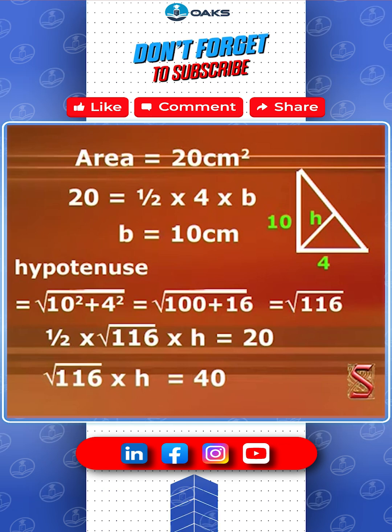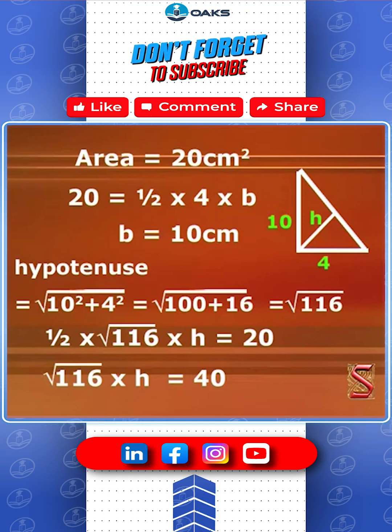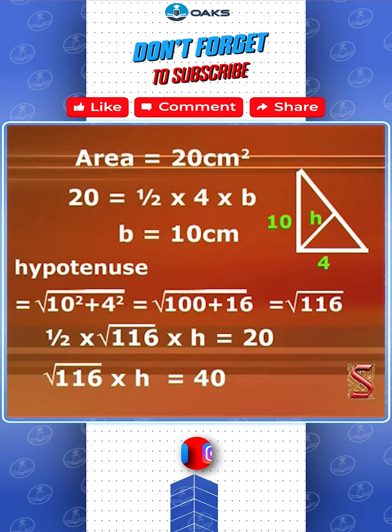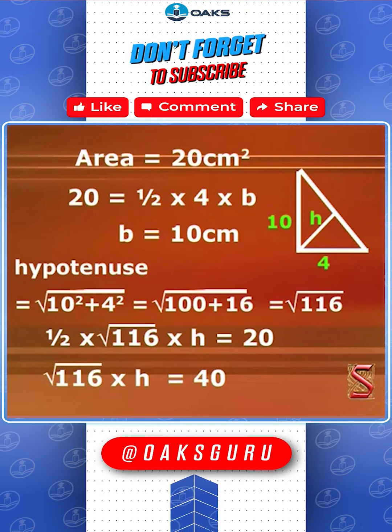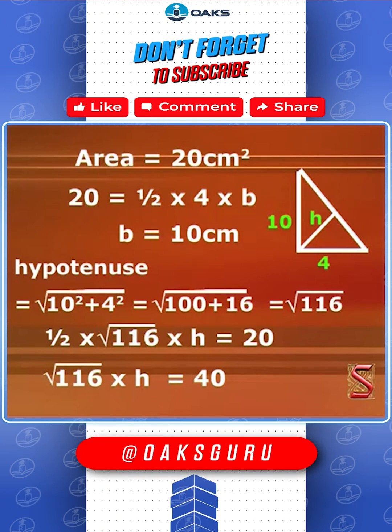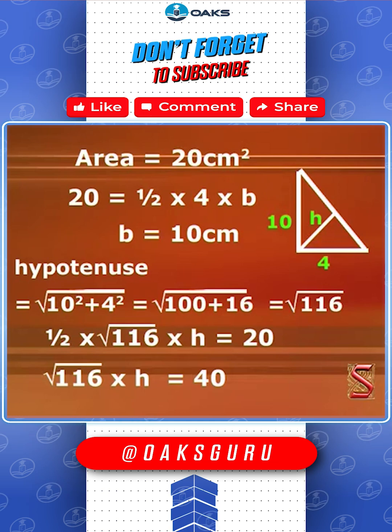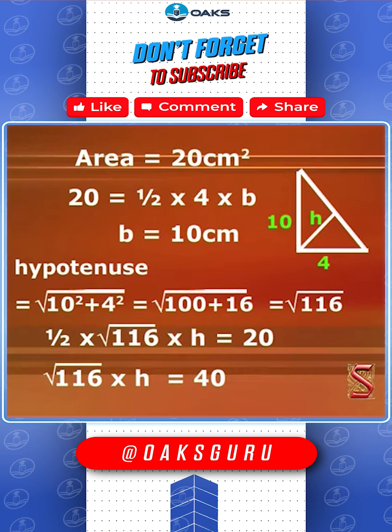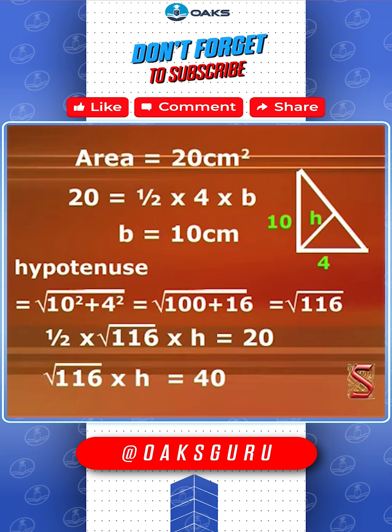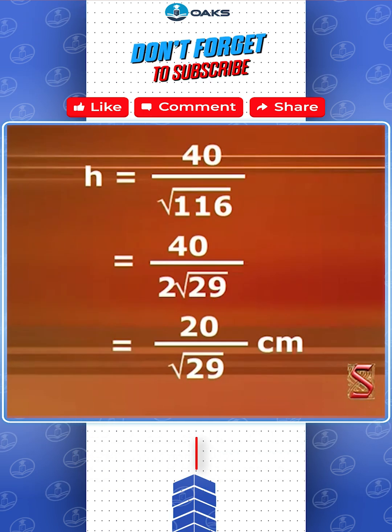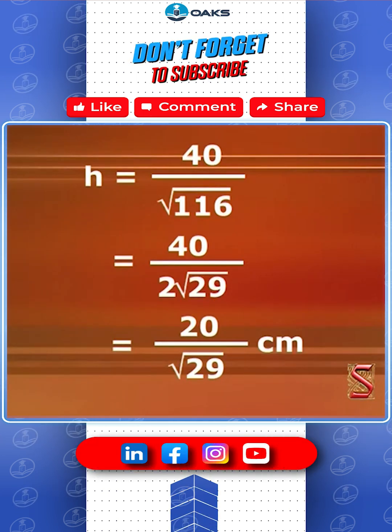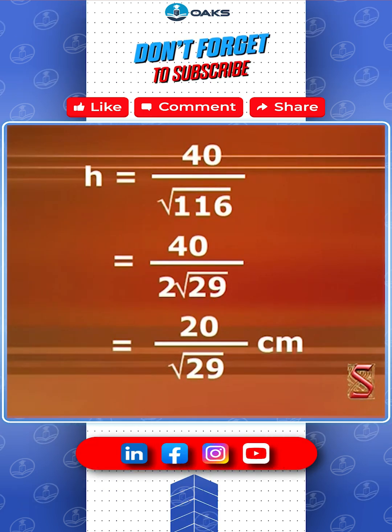Now, (1/2) × √116 × h = 20, therefore h = 20 by root 29 centimeters.